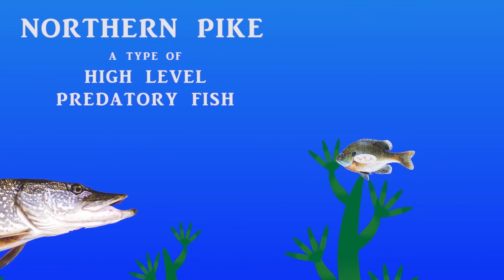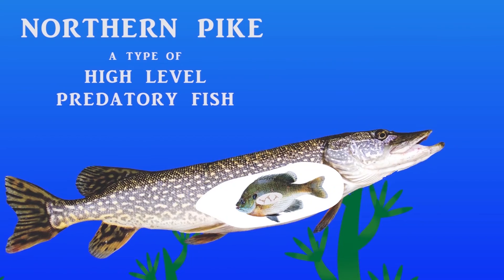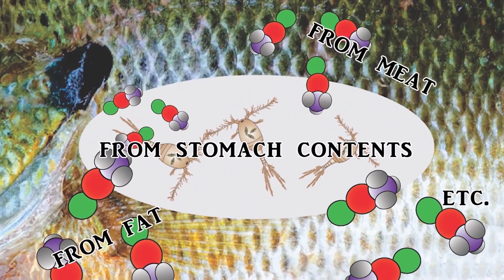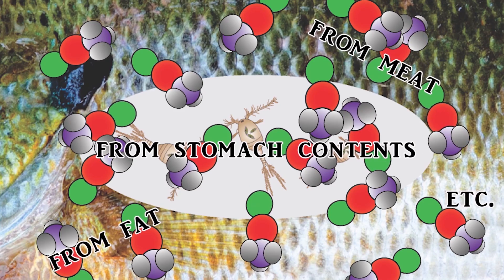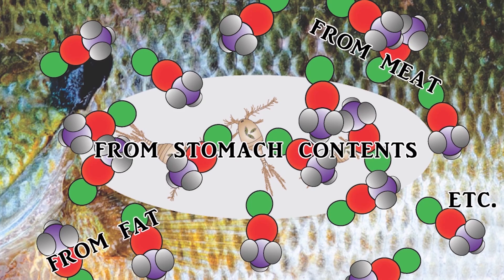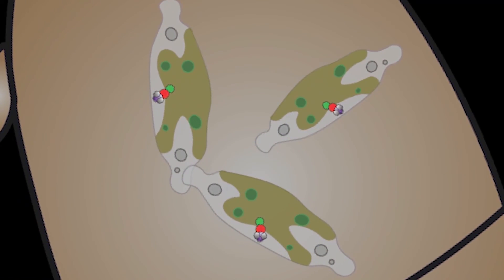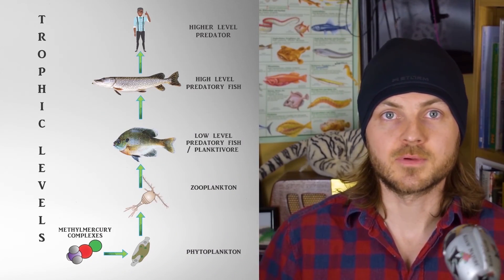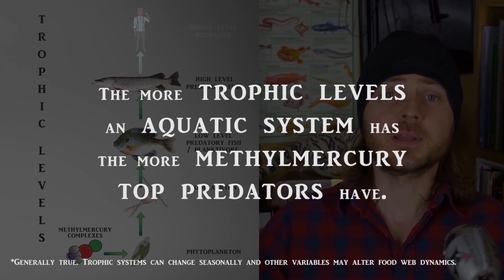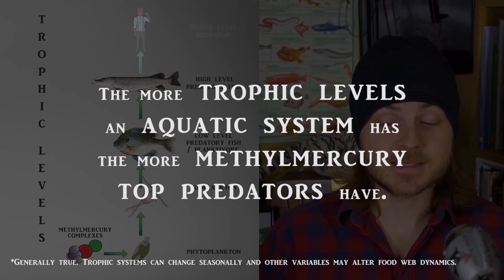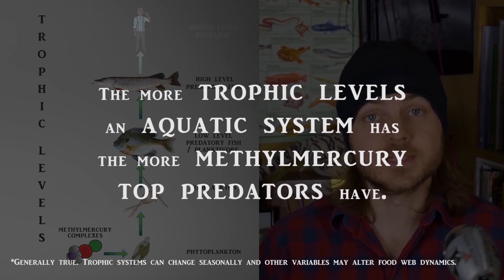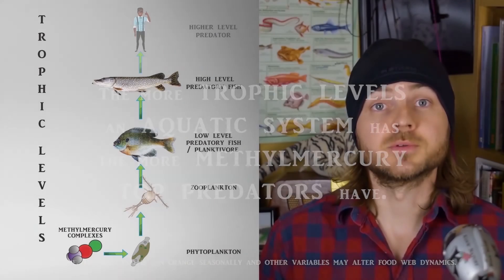Let's say a northern pike comes along and eats that bluegill. It's also consuming all the retained methylmercury from that bluegill's consumption of eating a bunch of copepods with retained methylmercury, that consumed a bunch of diatoms with retained methylmercury. These are examples of consumption events at differing trophic levels, and the more trophic levels an aquatic system has, the more methylmercury top predators in that system will have built up.